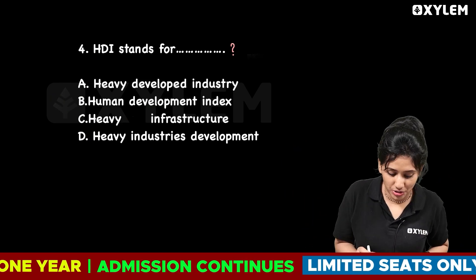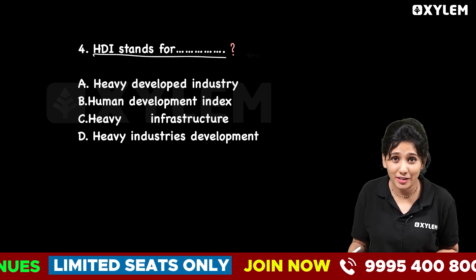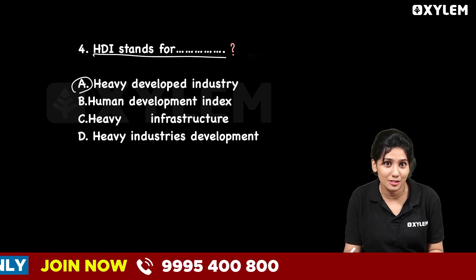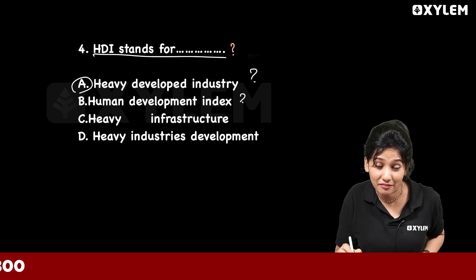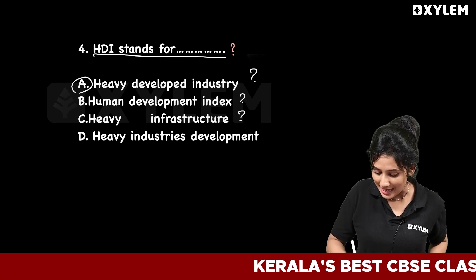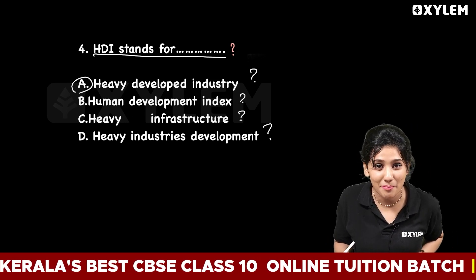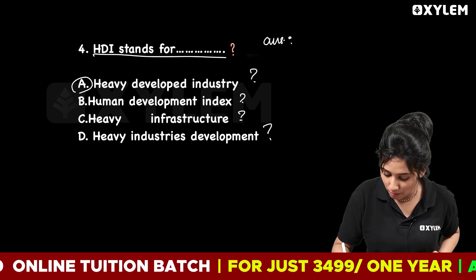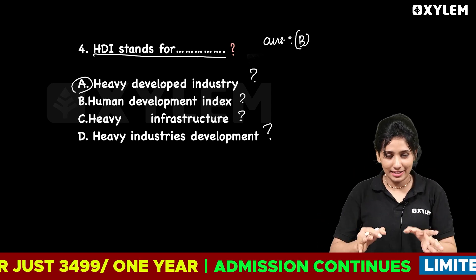The fourth question: HDI stands for dash. Option A: Heavy Developed Industry. Option B: Human Development Index. Option C: Heavy Infrastructure. Option D: Heavy Industries Development. The correct answer is Option B — HDI stands for Human Development Index. Very important.